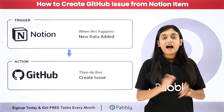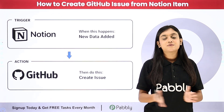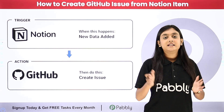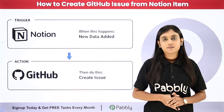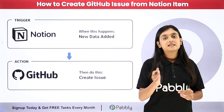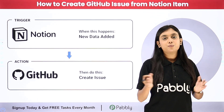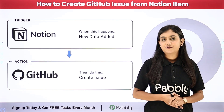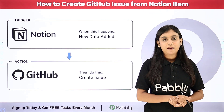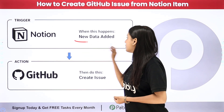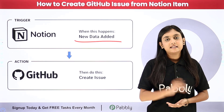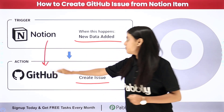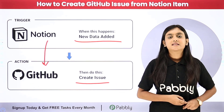I am part of a development team and we manage all our projects and plans with the help of Notion. As soon as any team member enters issue details in our Notion database as an item, I want to automatically create that item as an issue in my GitHub account so we can address it promptly. I am going to create this automation with the help of Pabbly Connect instead of doing it manually.